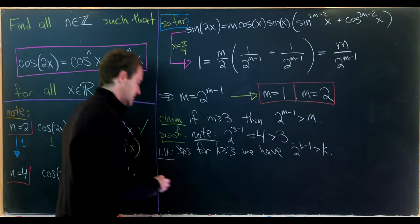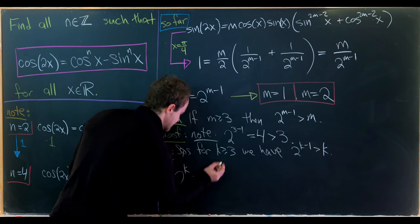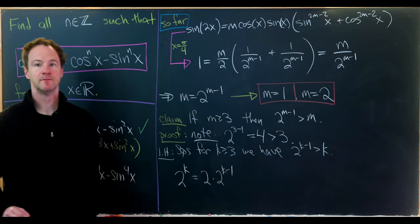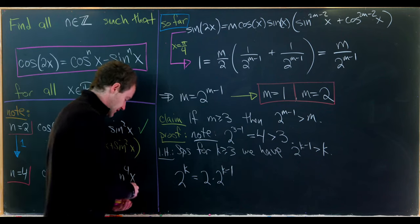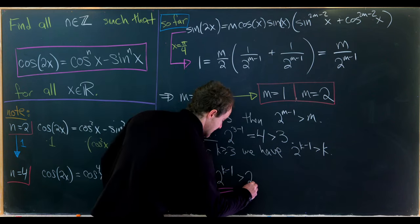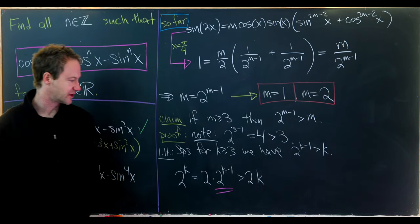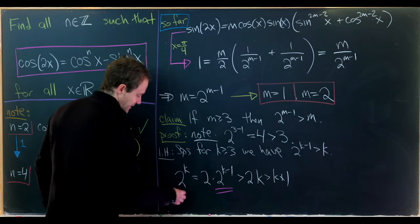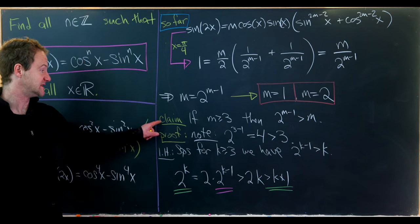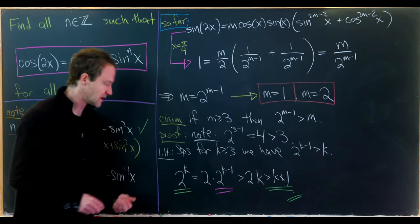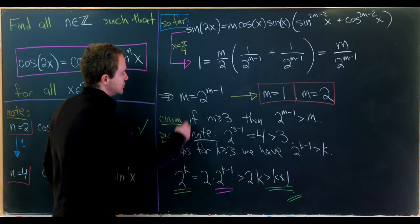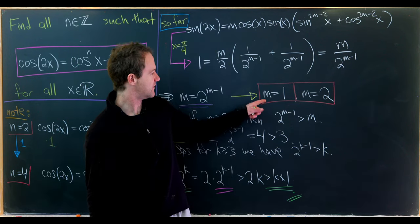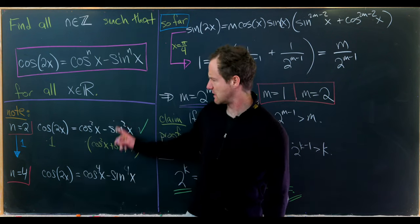We need to look at the next case, 2 to the k. That's equal to 2 to the k plus 1 minus 1, which equals 2 times 2 to the k minus 1. We can apply our induction hypothesis to see this is bigger than 2 times k. If k is bigger than or equal to 3, then 2 times k is strictly bigger than k plus 1. Reading from left to right, we've established the truth of this claim, meaning these m values are the only solutions. But this equation had to hold for our original equation to hold, giving us our solutions.